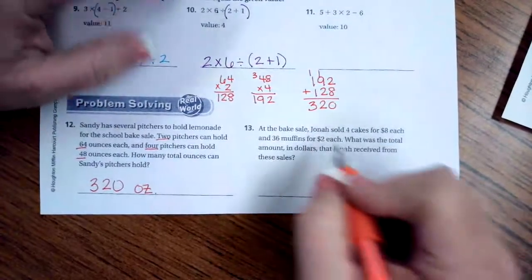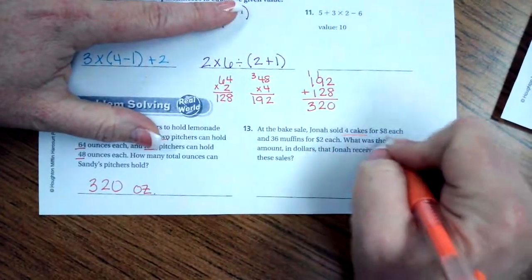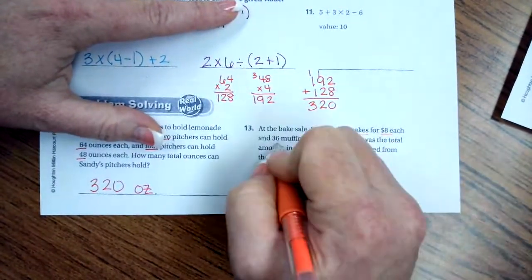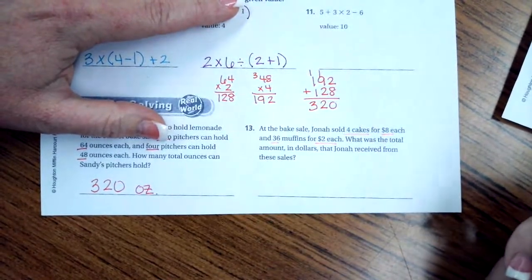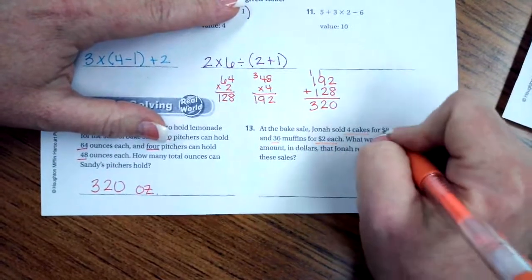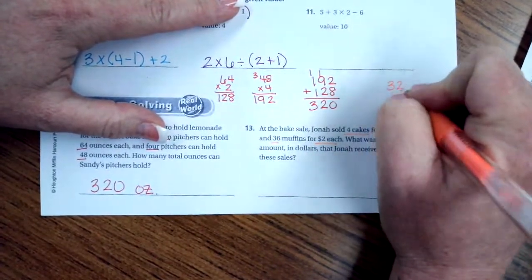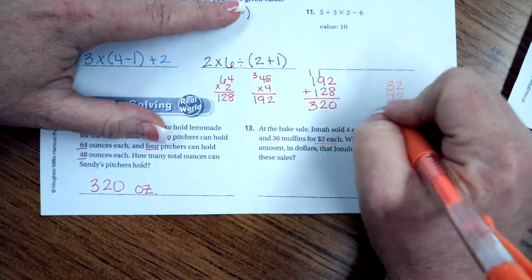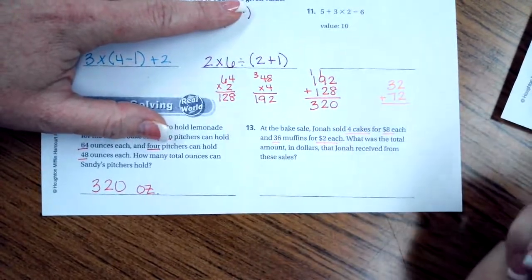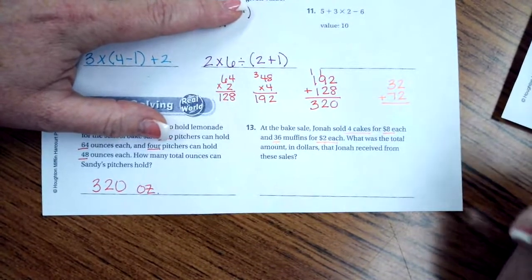At the bake sale, Jonah sold 4 cakes for $8 each, 36 muffins for $2 each. What was the total amount in dollars he received from these sales? So 4 times 8 is 32. And 36 times 2 is 72. You guys can totally do that math on your own. You don't need me for that.